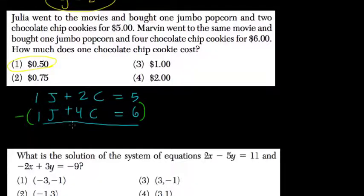So J and J subtract is 0. 2 minus 4 is negative 2, negative 2C. 5 minus 6 is negative 1. Negative 2C equals negative 1.